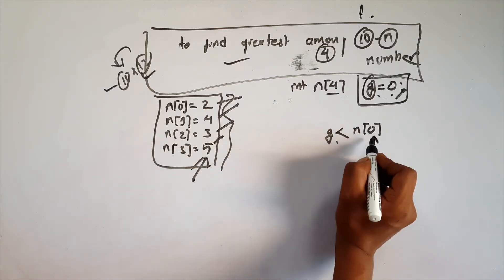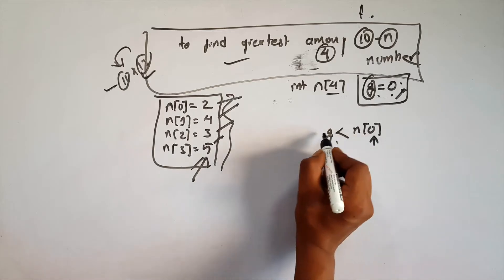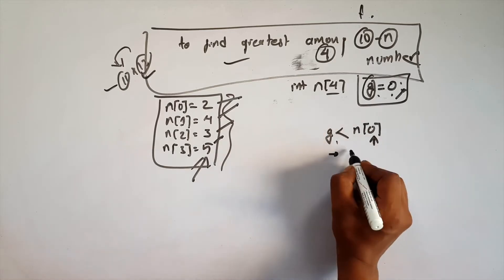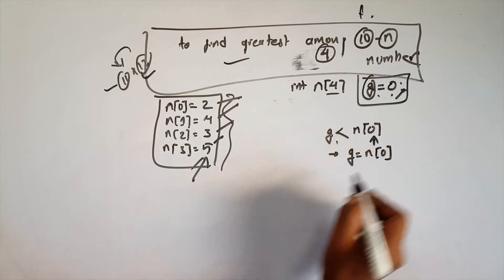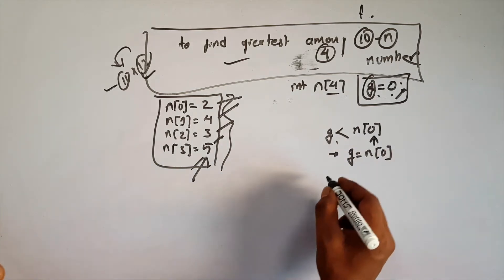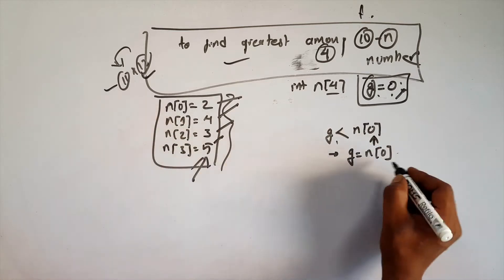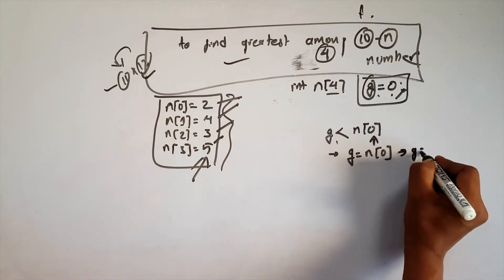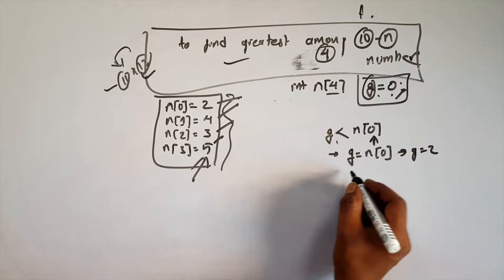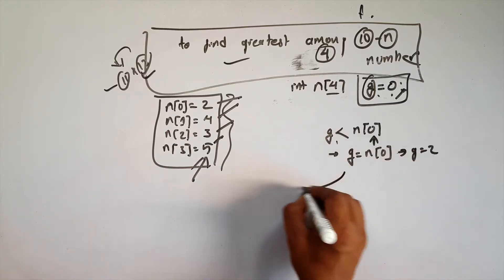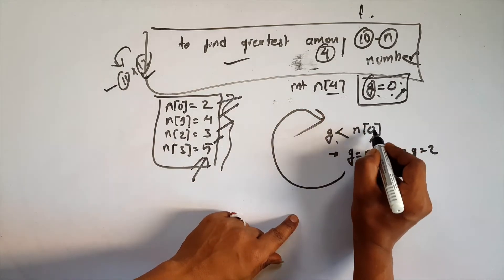What number is the greatest number? The greatest number is the first number. At that time, this condition is true. My greatest number is n0. Now this number is n0, my g is 2. This loop is the same — my g is the same, 1 is the same.